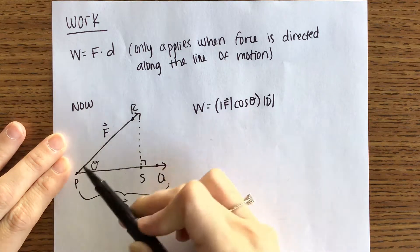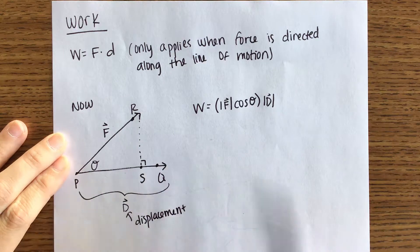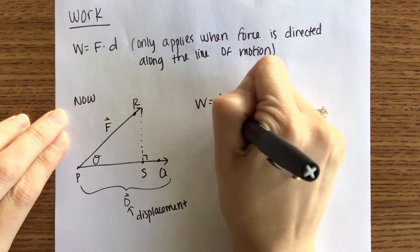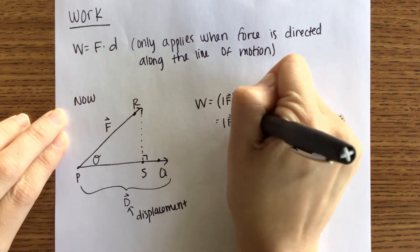So we have this force that's being applied. We have an object that's moving from P to Q. Another way to write this is the norm of F multiplied by the norm of D multiplied by cosine of theta.